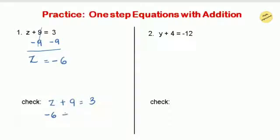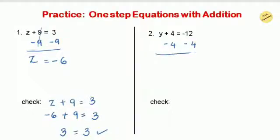Let's check: write the equation as z plus 9 equals 3, and substitute z with negative 6. Negative 6 plus 9: subtract and put the greater number's sign, giving 3. Both sides equal 3, so z equals negative 6 is the correct answer. Now the next question is also an addition equation where we subtract 4 from both sides.